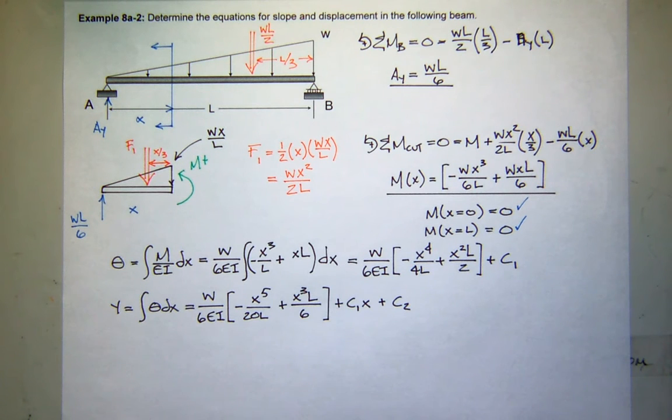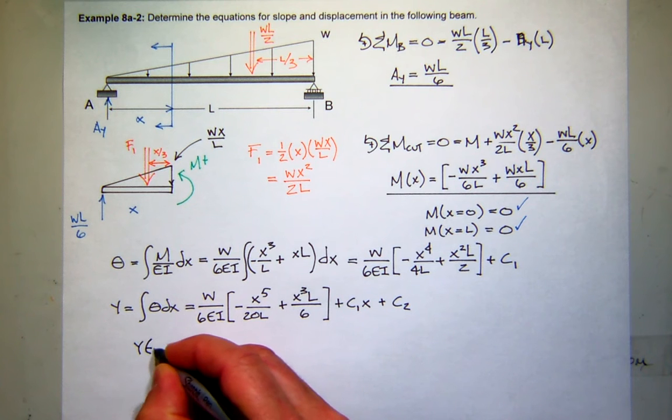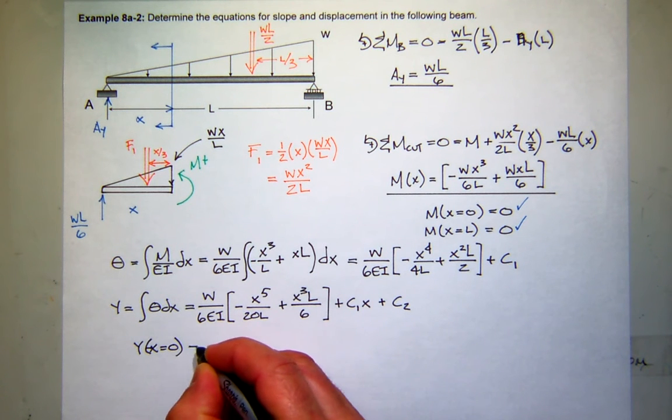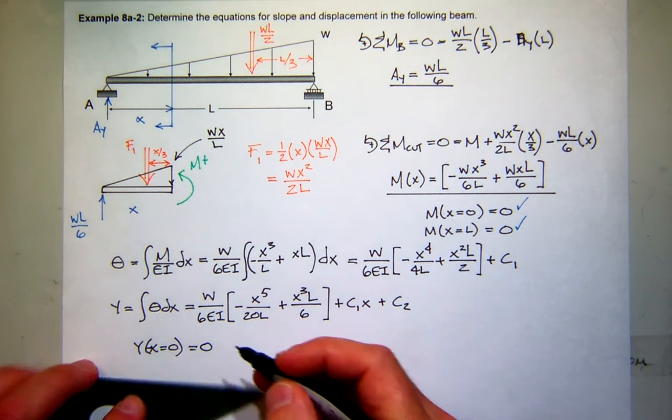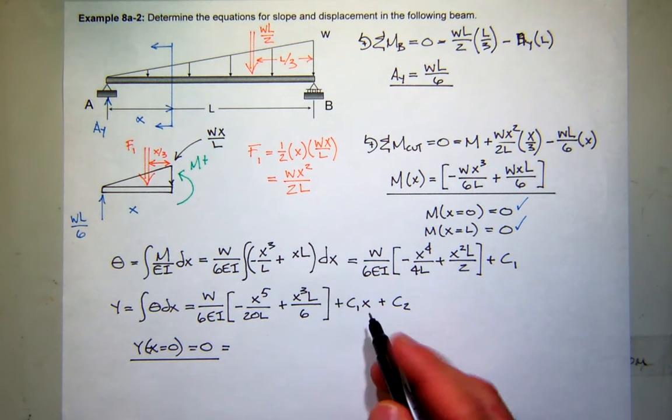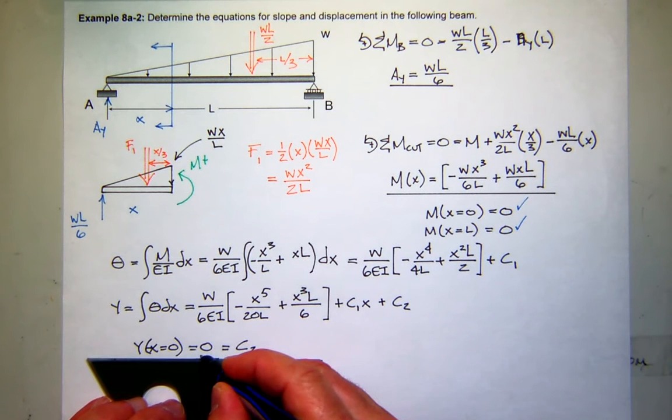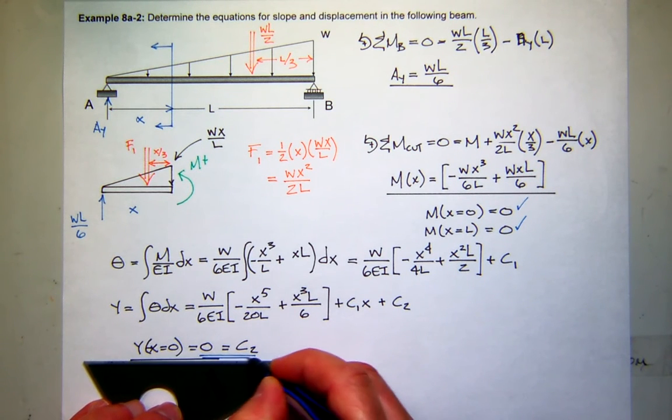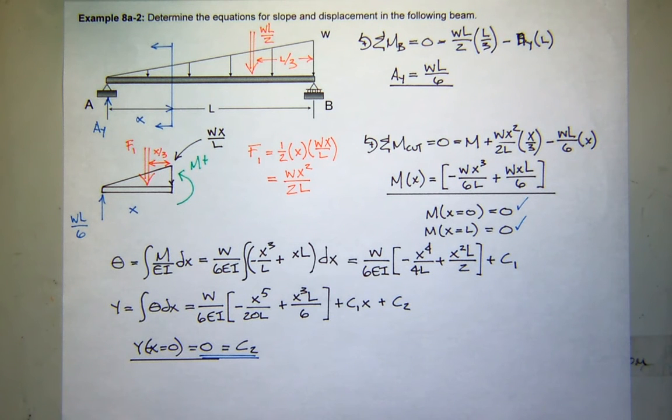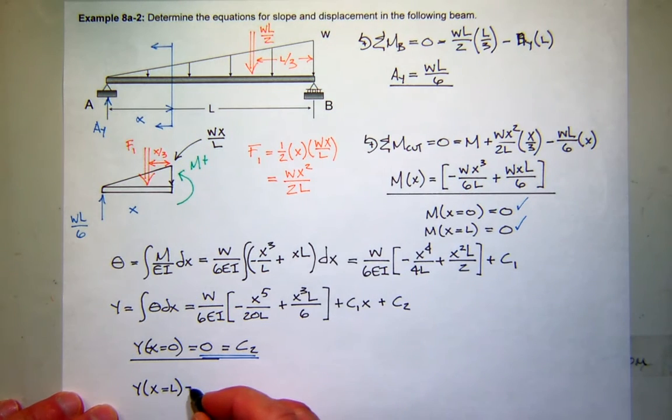I think the easiest one to do first would be at x equals 0, we know the displacement is 0. That's our condition. So when you plug in x equals 0, what are you left with? C2. That tells you that C2 has to be 0. That was nice. Next will be a little more challenging. Not much. We know that at x equals L, that's point B, the displacement is also 0.